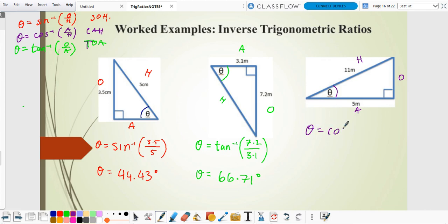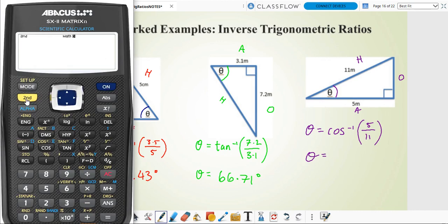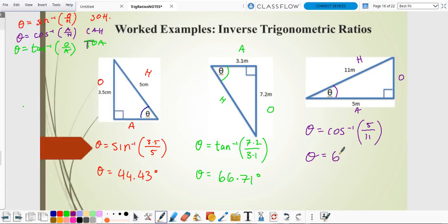So angle equals cos inverse. Don't forget it's inverse. And A over H. So 5 over 11. And then put it in your calc. Cos inverse. 5 over 11. And that should work. There you go. Put the bracket in the wrong spot. Let me try without the bracket. It should work. Yeah. 62.96.